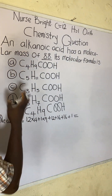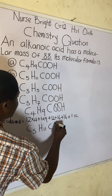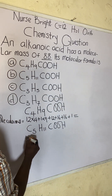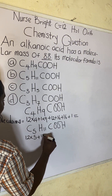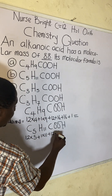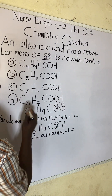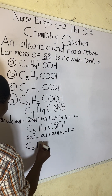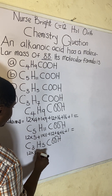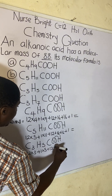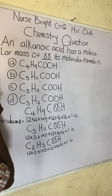For option B, which is C5H11COOH, it's going to be 12 × 5, plus 1 × 11, plus 12, plus 16 + 16, plus 1. For option C, which is C3H5COOH, it's going to be 12 × 3, plus 1 × 5, plus 12, plus 16 + 16, plus 1.